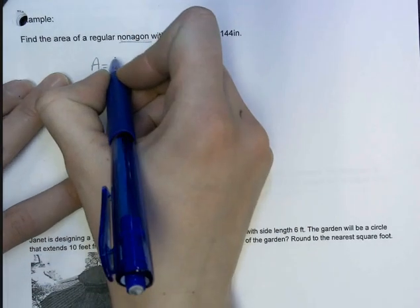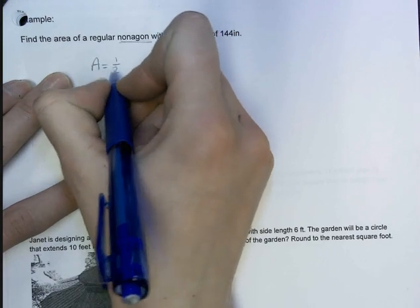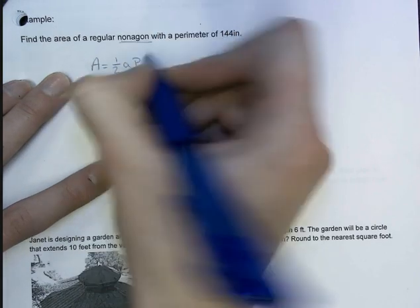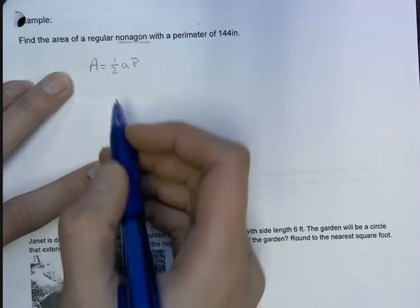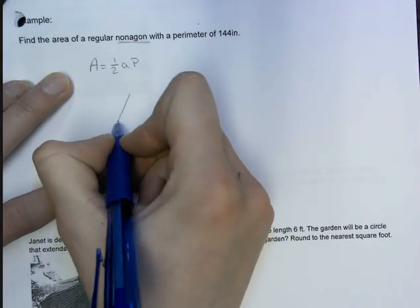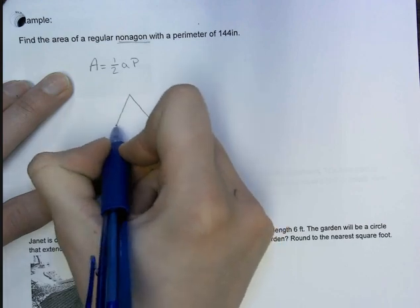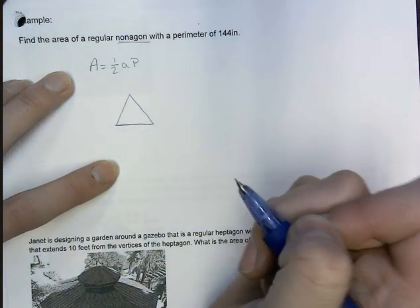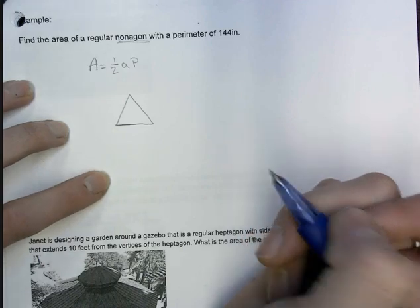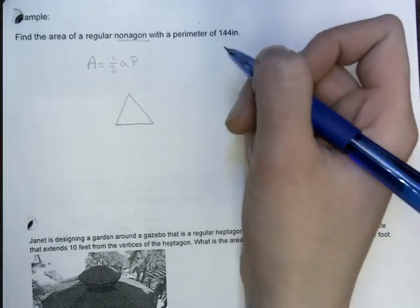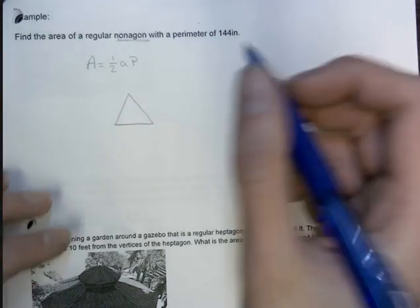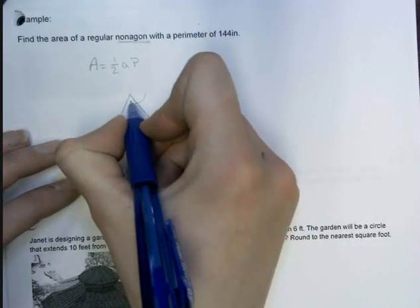But remember our system, I can do the area of a regular polygon is equal to one-half the apothem times the perimeter. Remember we can also find the number of triangles within a nonagon and multiply by nine. So if I have one triangle and I can find the area of that, if I multiply that by nine, that's going to give me the area of this regular nonagon. So if I have this triangle, this remember is the central angle.